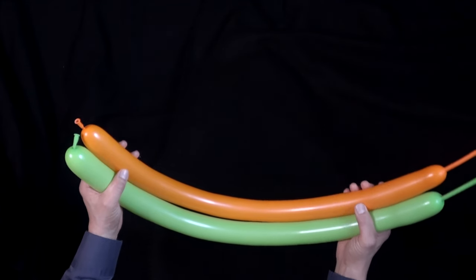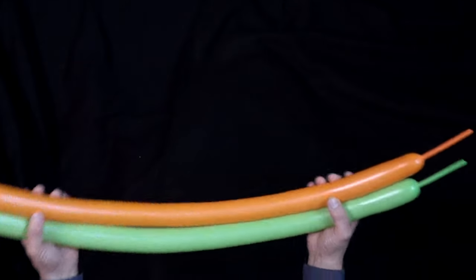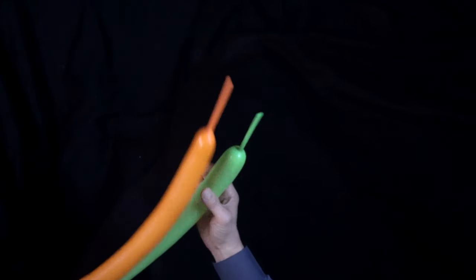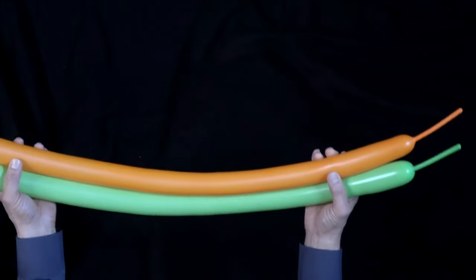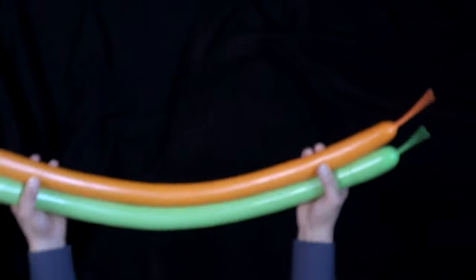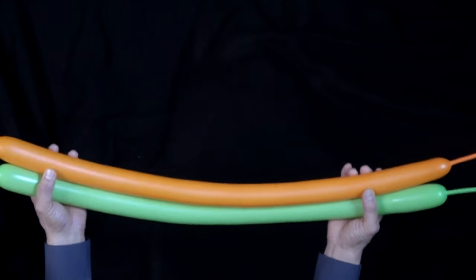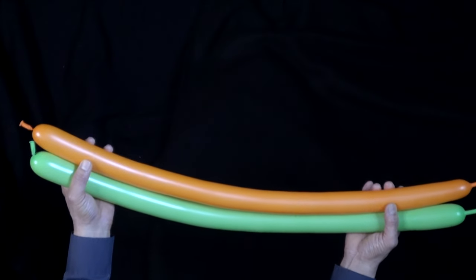For this balloon hat you're going to need two balloons and inflate them to about three or four inches from the end. You want them to be fairly close, as close as you can. Even if you don't get them that close on the inflation you still have some leeway, so don't worry about it.